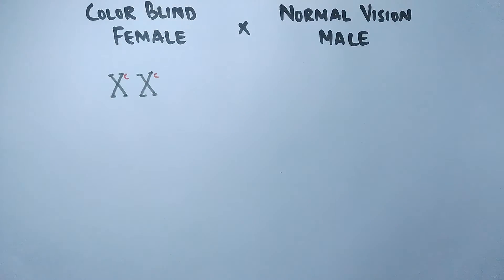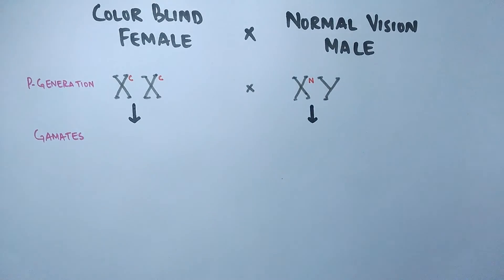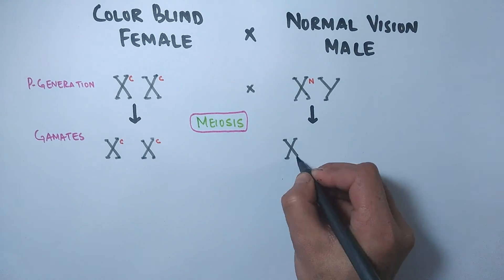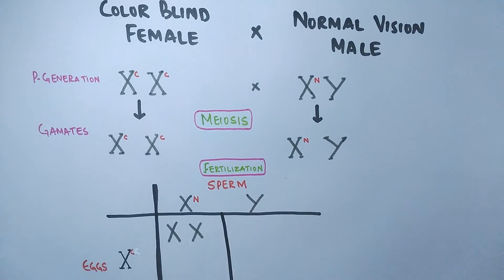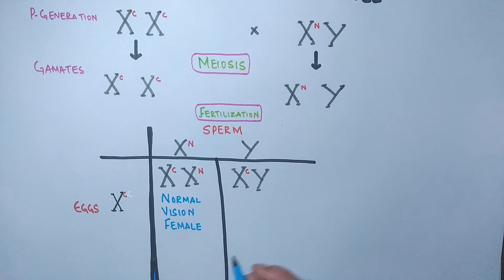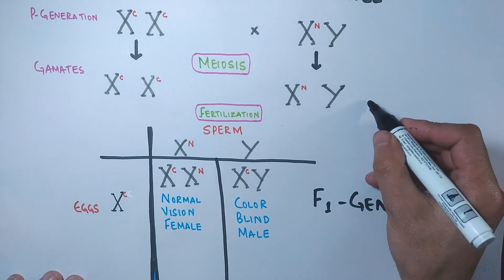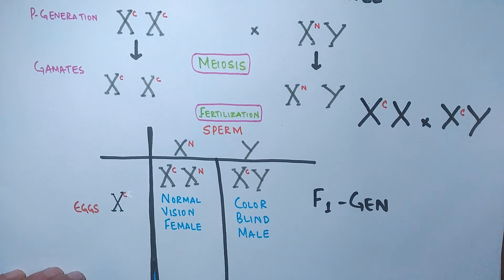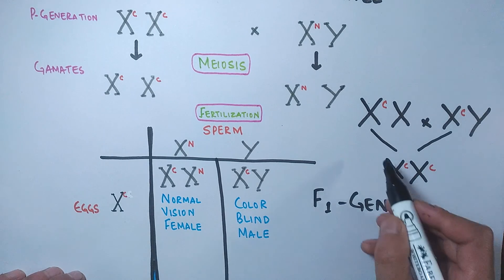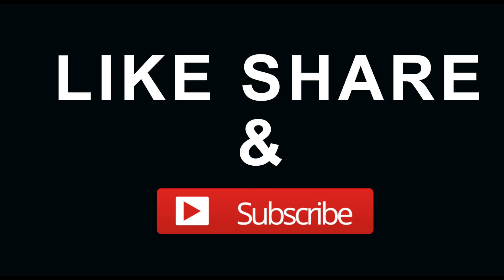Things change when we cross a colorblind female with a normal vision male. The parent generation is X-C X-C for the female and X-N Y for the male. Gametes are X-C from the female and X-N and Y from the male. The offspring are X-C X-N females — normal vision — and X-C Y males — colorblind. This is because males receive their X chromosome only from their mother, and here the mother was colorblind with both alleles defective. In X-linked inheritance, females mostly act as carriers; for a colorblind female to appear, both parents must donate an X chromosome with a defective allele, meaning the male parent must always be colorblind. This is all about the genetics of colorblindness in humans.